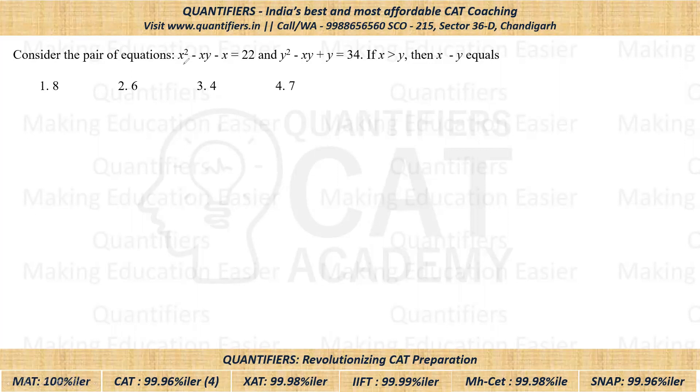Now, if you look at the two equations, the first equation is X² - XY - X = 22 and Y² - XY + Y = 34. Now, if you add two equations, so students on adding, you will get X² + Y², and you will get negative of 2XY.